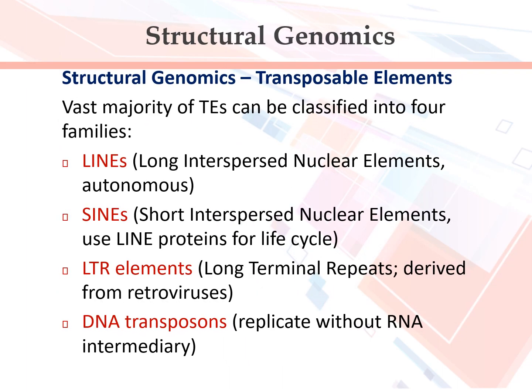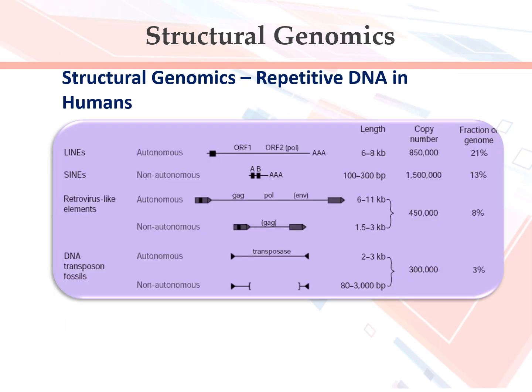Transposable elements: the vast majority of TEs can be classified into four families. LINEs are long interspersed nuclear elements that are autonomous. SINEs are short interspersed nuclear elements that use LINE proteins for their life cycle. LTR elements have long terminal repeats and are derived from retroviruses. DNA transposons replicate without an RNA intermediary. Repetitive DNA is prominent in the human genome.